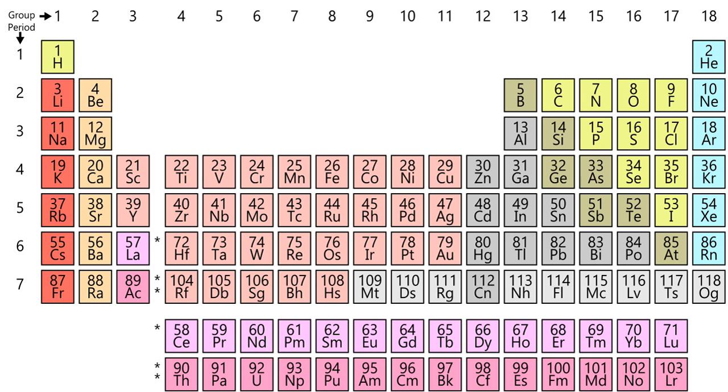The naming of various substances now known as elements precedes the atomic theory of matter, as names were given locally by various cultures to various minerals, metals, compounds, alloys, mixtures, and other materials, although at the time it was not known which chemicals were elements and which compounds. As they were identified as elements, the existing names for anciently known elements were kept in most countries. National differences emerged over the names of elements either for convenience, linguistic niceties, or nationalism.